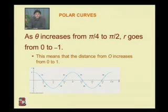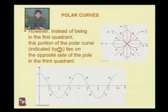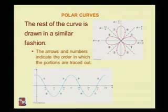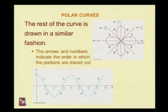We draw the corresponding portion of the polar curve. As theta increases from pi/4 to pi/2, r goes from 0 to −1. This means the distance from the origin increases from 0 to 1, but instead of being in the first quadrant, this portion of the polar curve is on the opposite side of the pole in the third quadrant. The rest of the curve is drawn in a similar fashion.